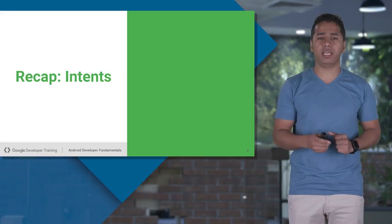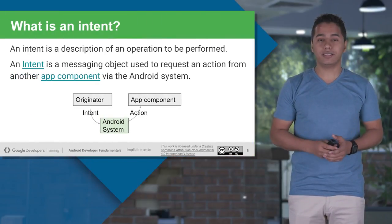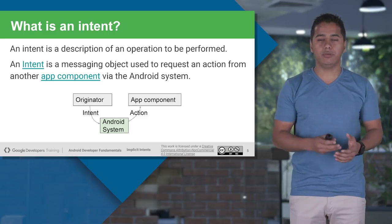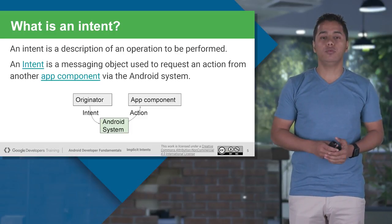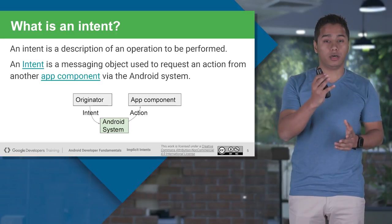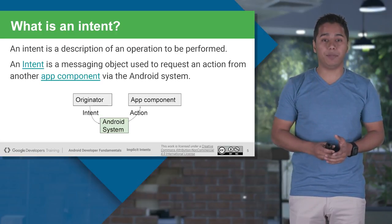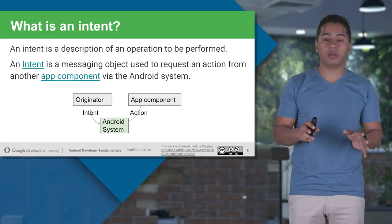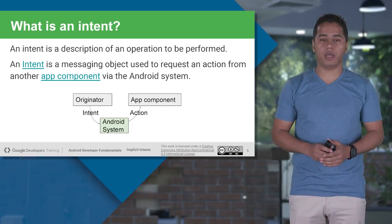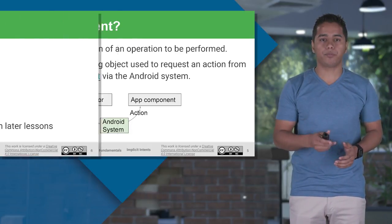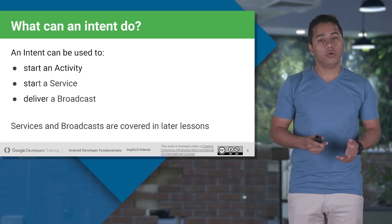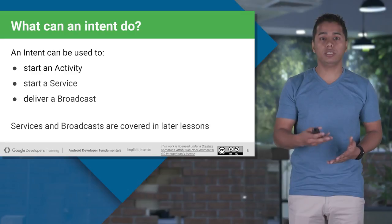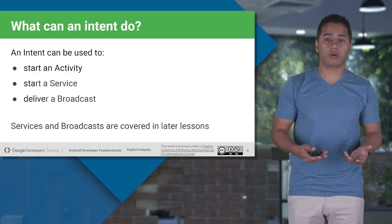Let's do a small recap. We all know what an intent is. Intents are classes used to invoke fundamental components like activity, services, and broadcast receivers. We also looked at the block diagram where whenever you click on any application, an intent is fired and the Android system checks for that particular action and the app component turns on. Intents can be used to start an activity, start a service, and start a broadcast receiver.